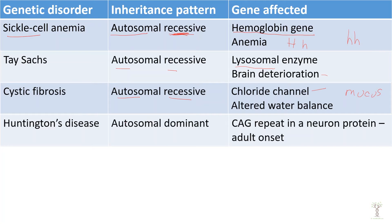Huntington's is an autosomal dominant mutation. If you have a Huntington's allele you will have the disease even if you're a heterozygote. So actually I want to point out why these disease alleles continue in the population if they often cause death at a young age.